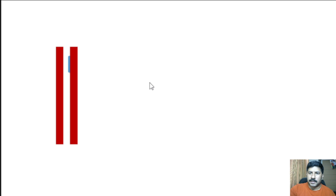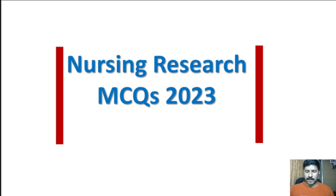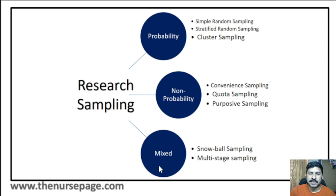Nursing research MCQs 2023. Before going to the topic, I will briefly explain about some terms and types so it will be easy to understand. First, we will explain about nursing research samplings. The sampling technique is mainly divided into three categories: one is probability sampling, second is non-probability sampling, third is mixed type — meaning both probability and non-probability sampling.